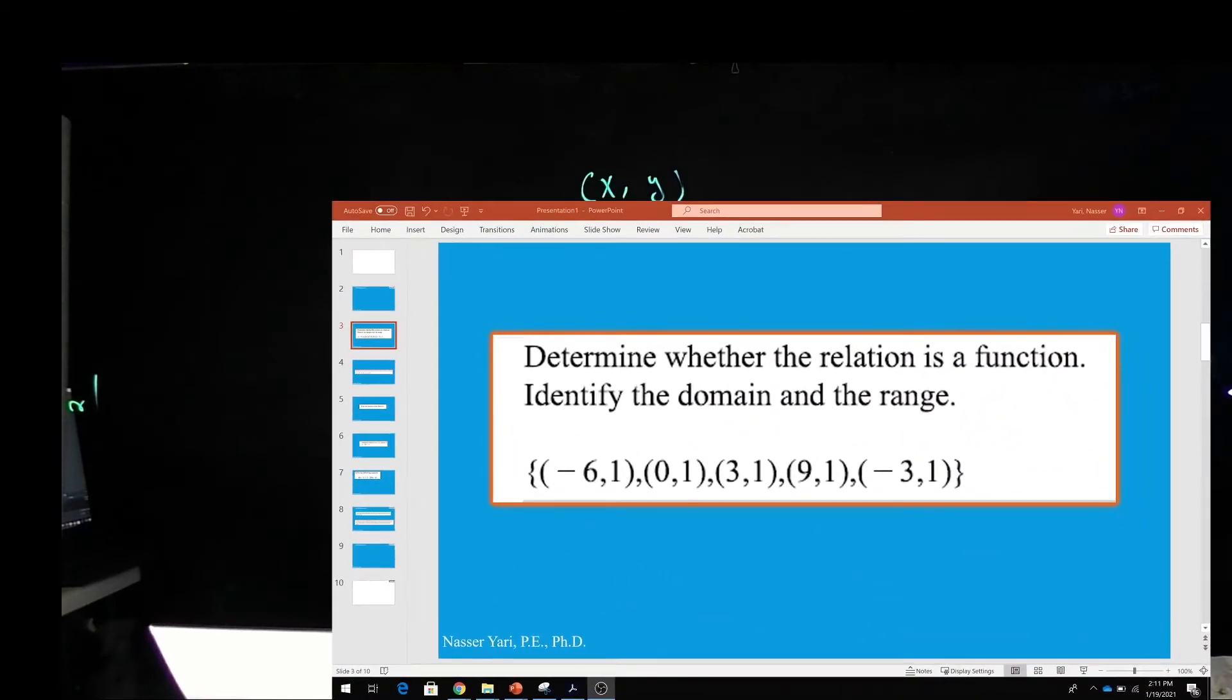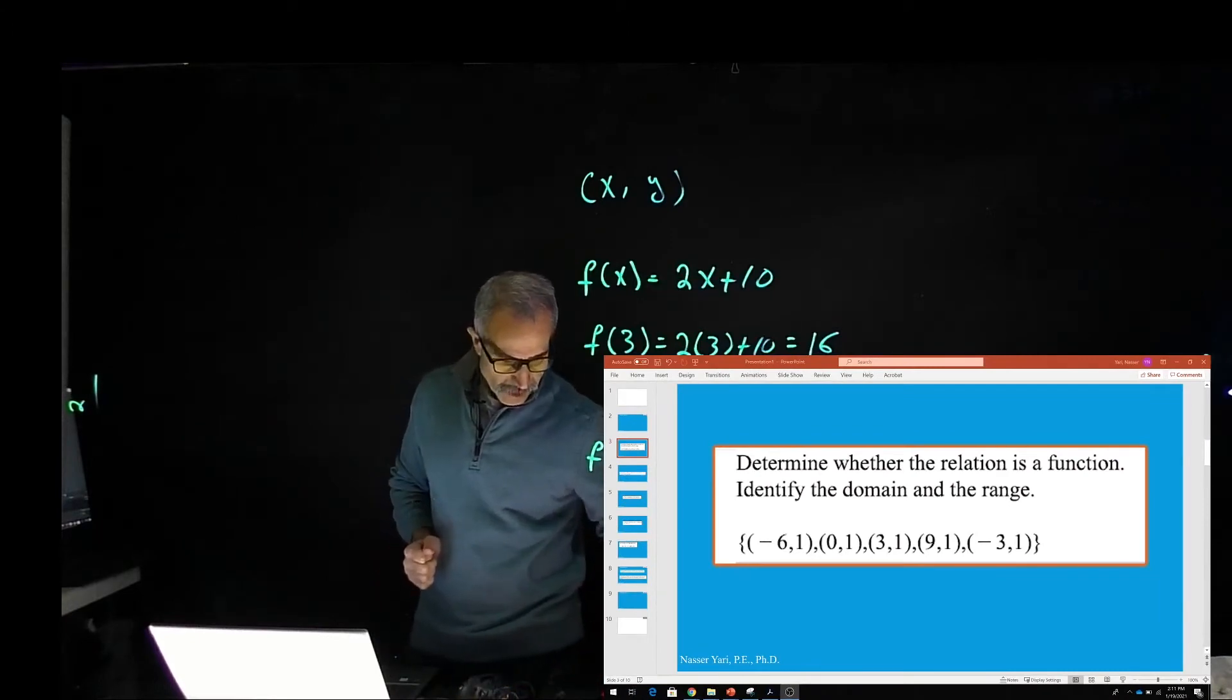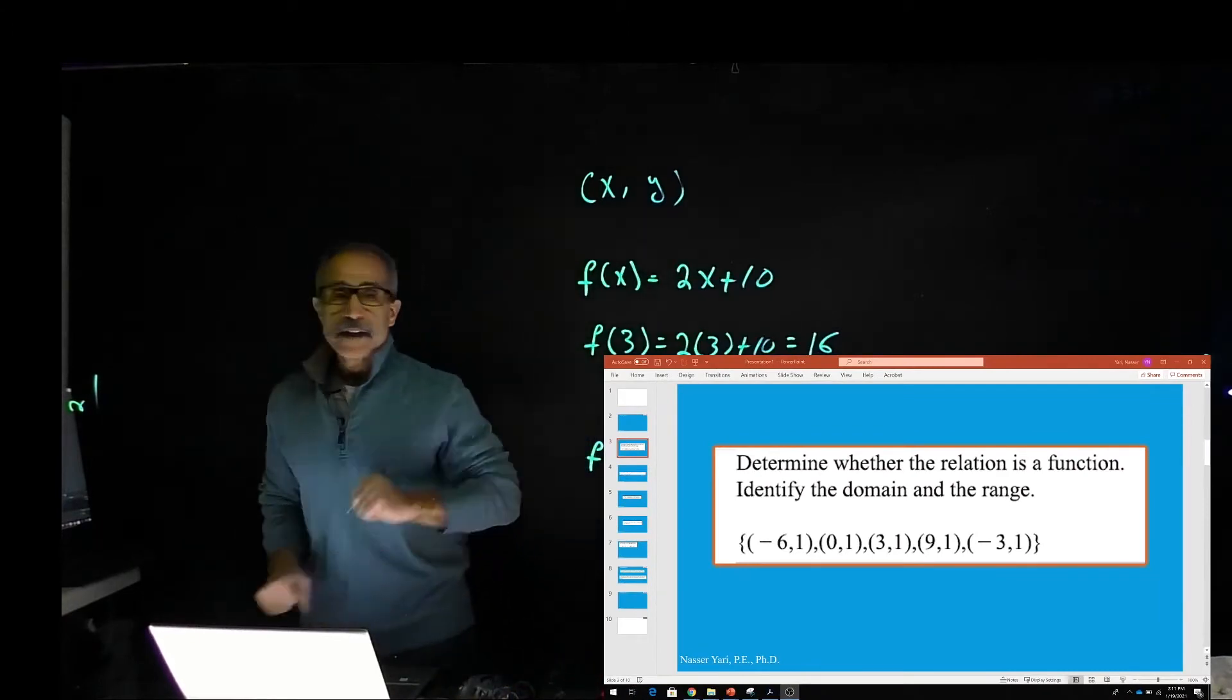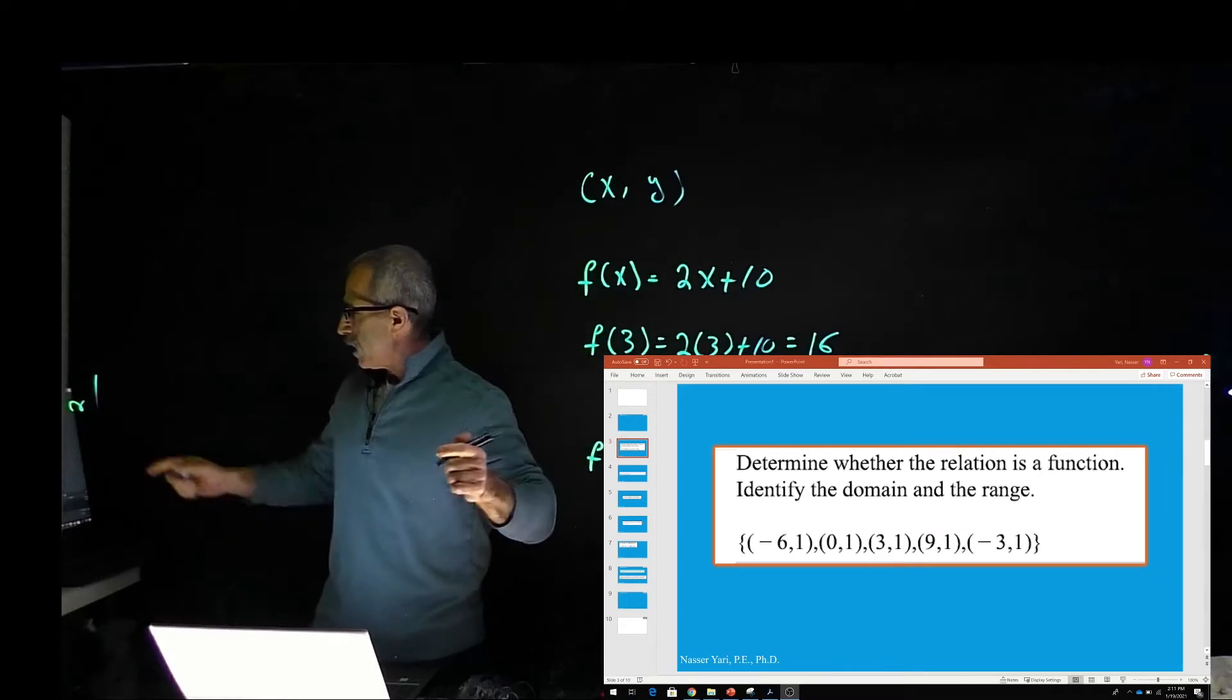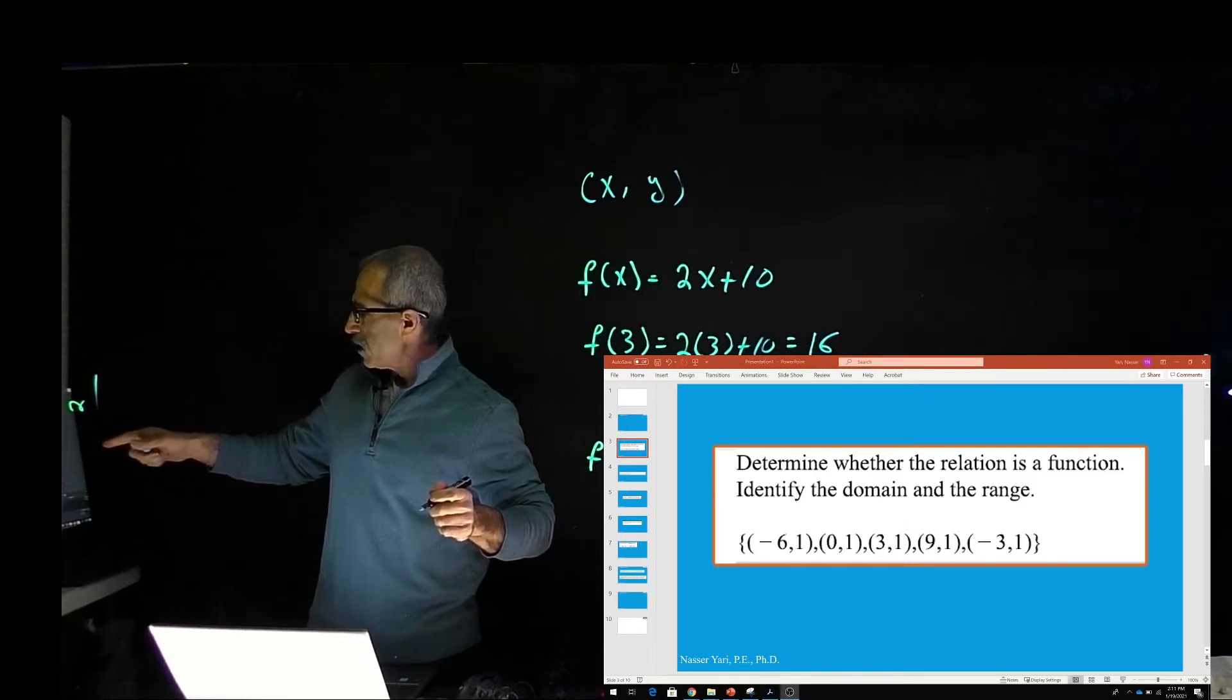Right here, you should be able to see this. It says determine whether the relationship is a function, identify the domain and range. We're going to identify the domain and range of that function. As you can see on the screen, we have (-6,1), (0,1), (3,1), (9,1), and (-3,1).